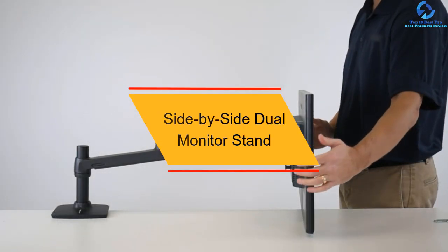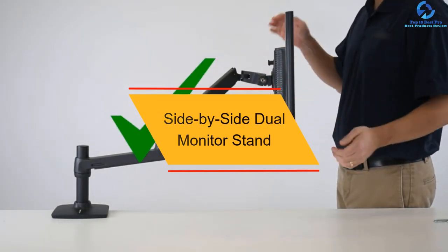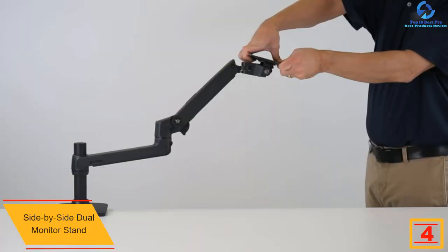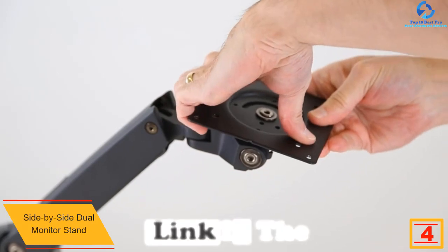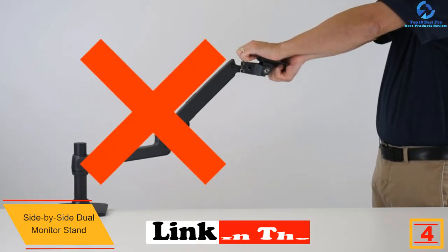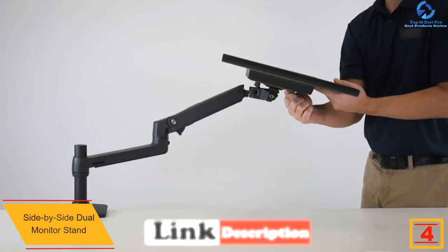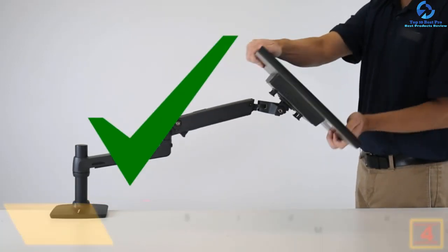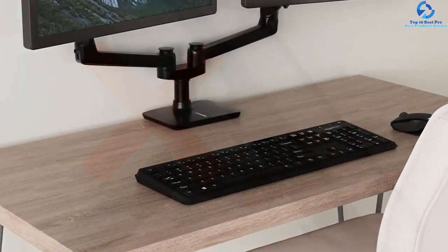At number 4, we have the Side-by-Side Dual Monitor Stand. The main feature of this modern dual monitor stand is that it comes with extendable and retractable arms. These particular arms can be tilted to alter reading angles and can also be rotated to get better views. The design of this stand is in a way that it can be used with monitors from almost all the manufacturers.